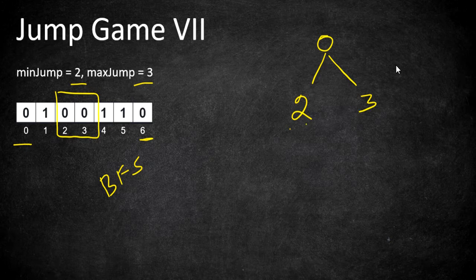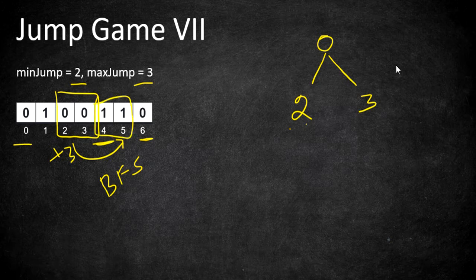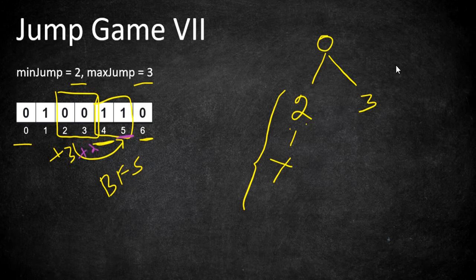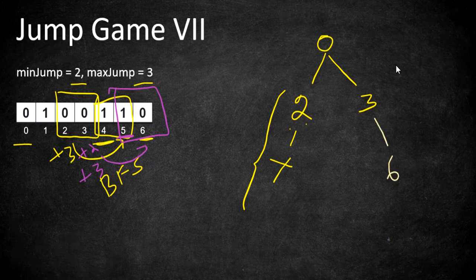From index 2, adding 2 gives index 4 and adding 3 gives index 5. Both positions 4 and 5 are not zeros, so we cannot jump - that path ends. From index 3, adding 2 gives index 5 and adding 3 gives index 6. Index 5 is a 1 so we cannot jump there, but index 6 is a 0. Index 6 is actually the last index of the string, so we have reached our destination and return true.